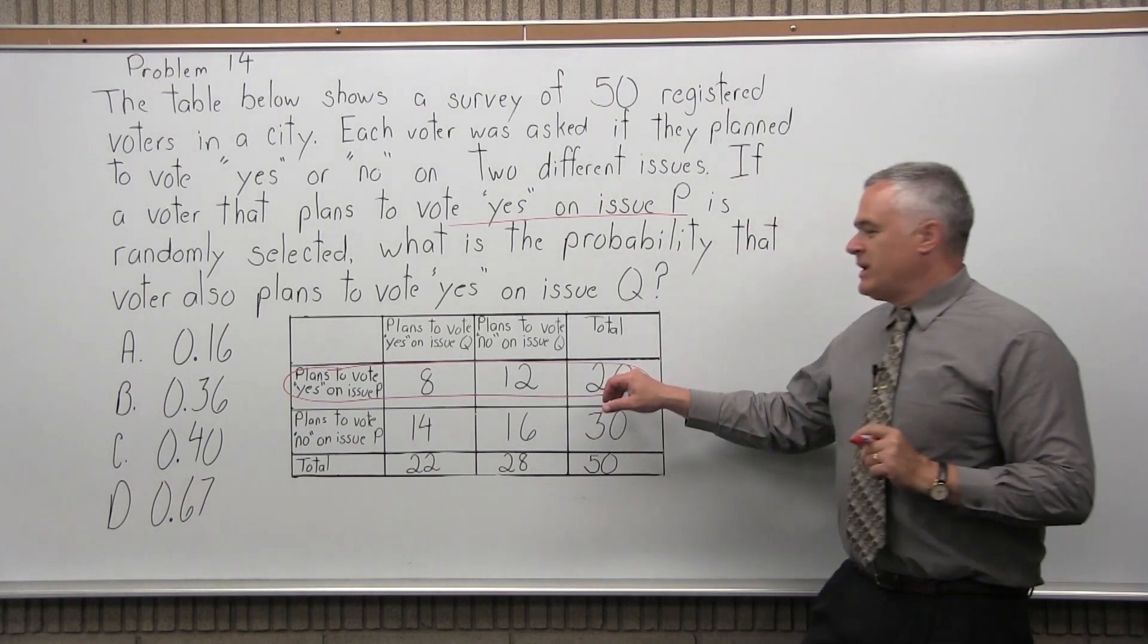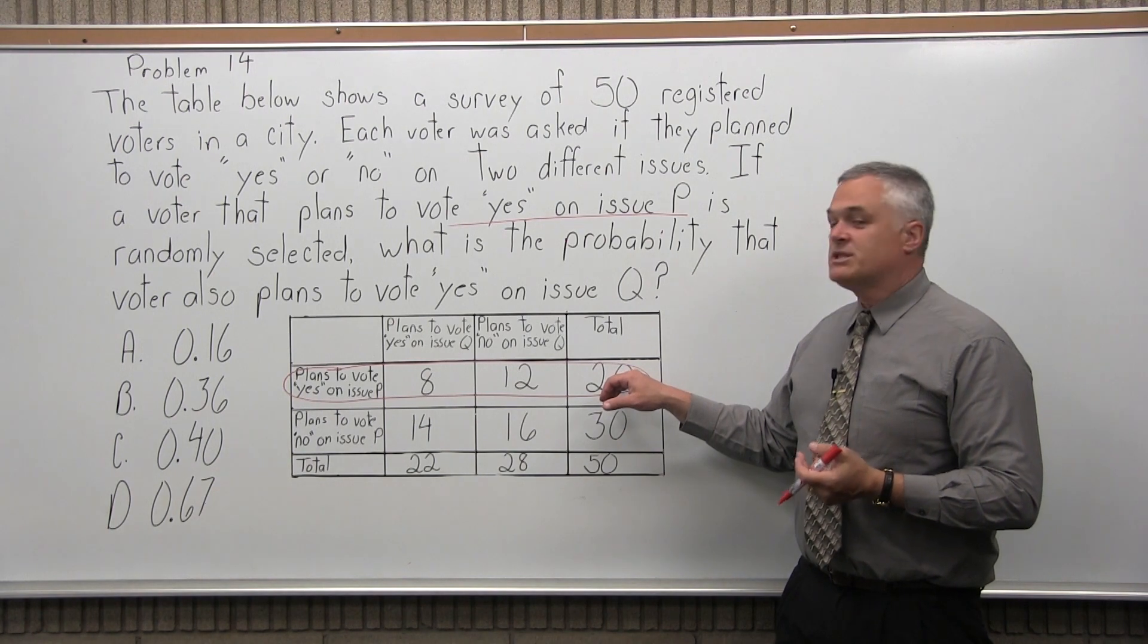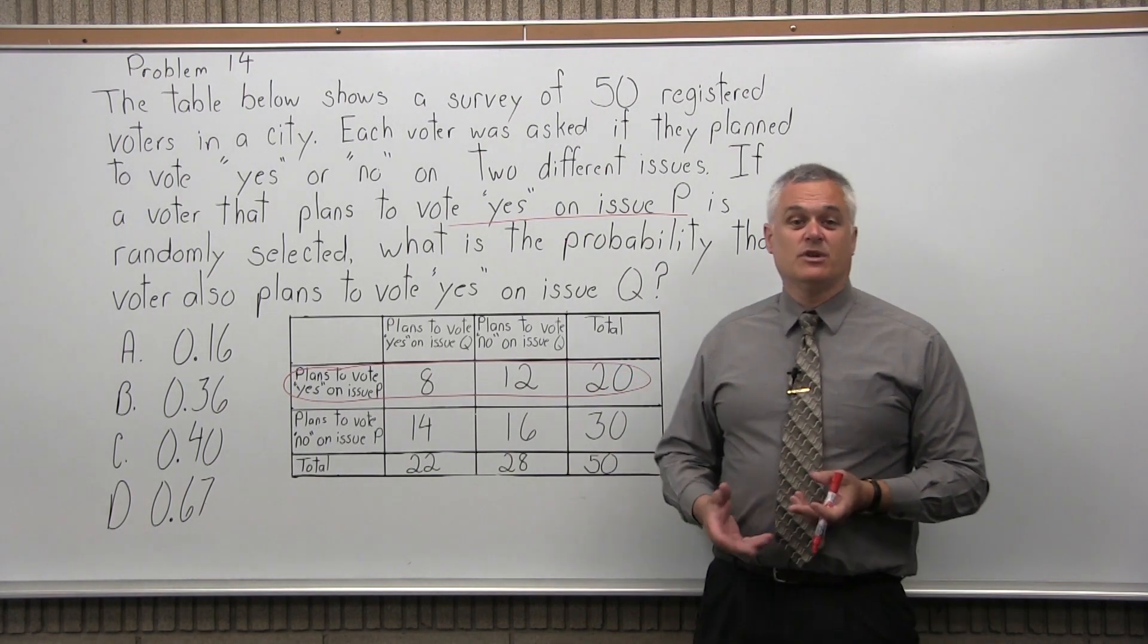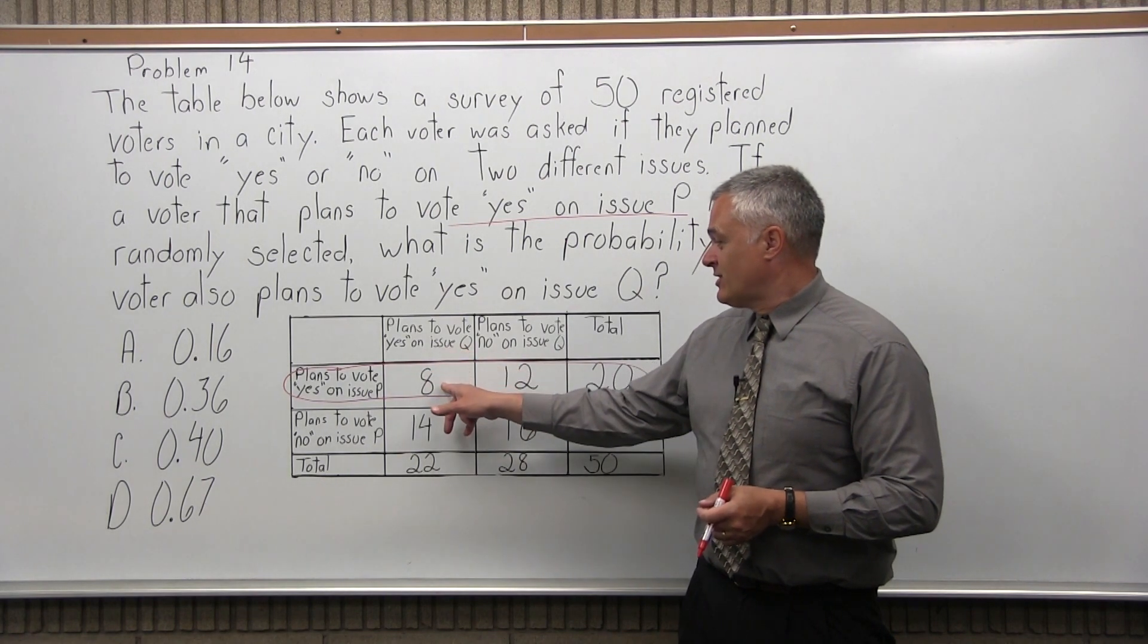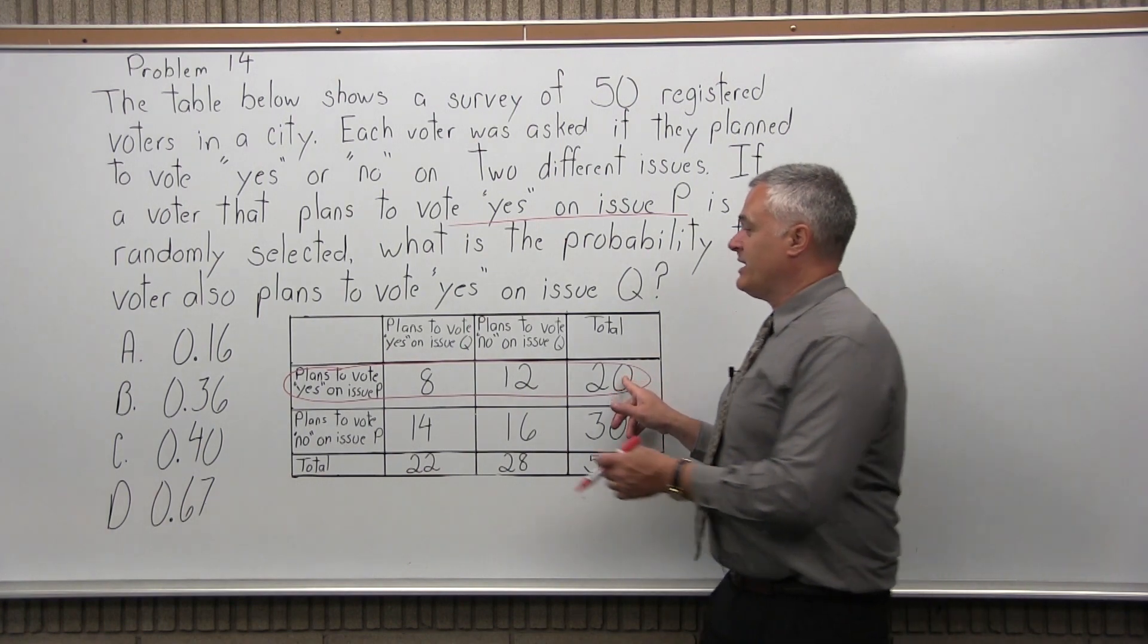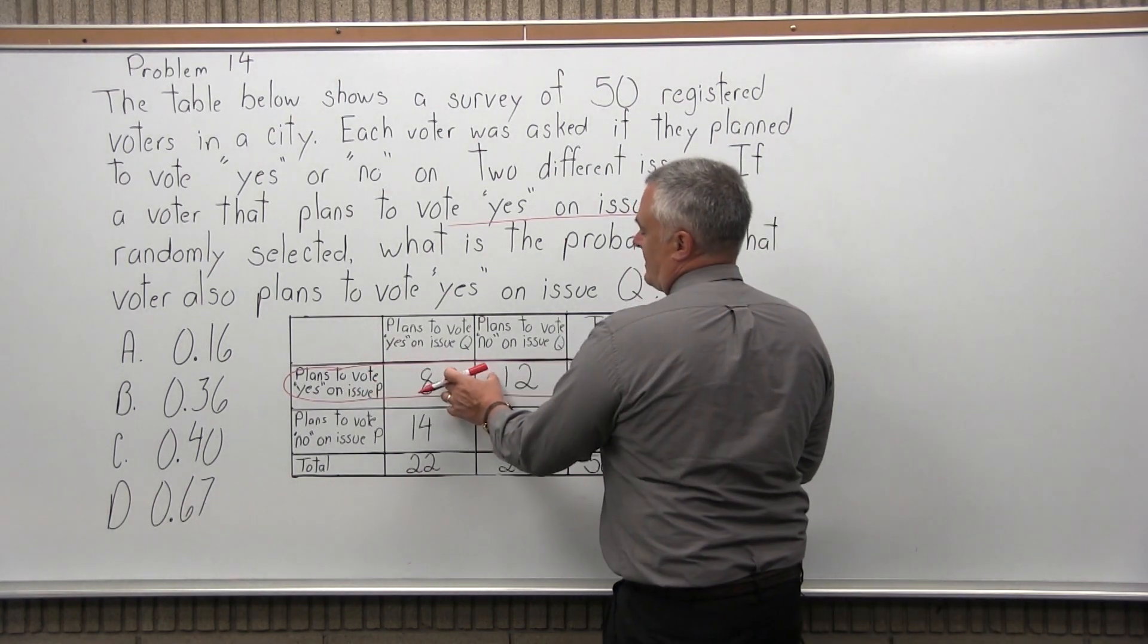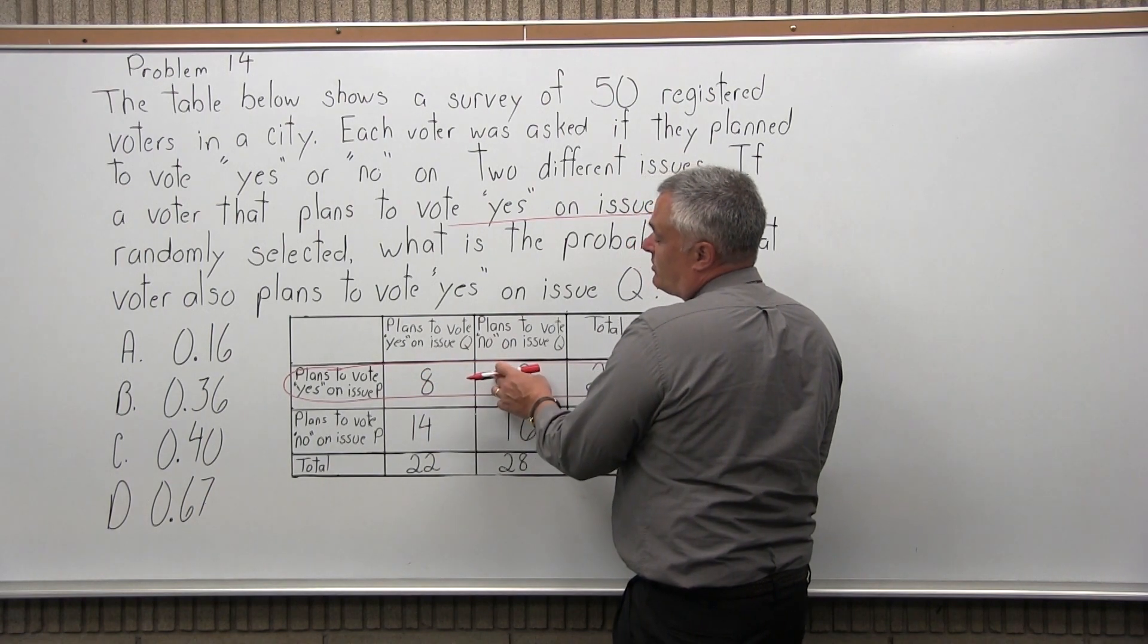So of the 20 people who are going to vote yes on issue P, what's the probability that you happen to choose one that's also going to vote yes on issue Q? So Q is broken down. Yes votes on Q, no votes on Q. So of the 20 that will vote yes on P, this 8 that will also vote yes on Q, and 12 that will vote no on Q.